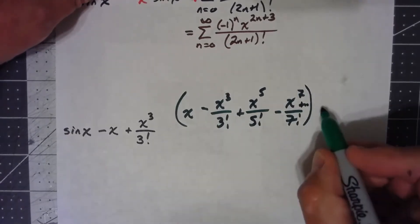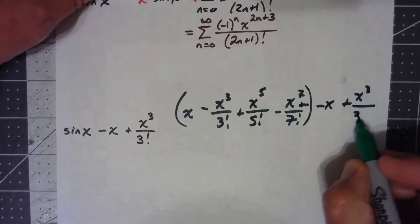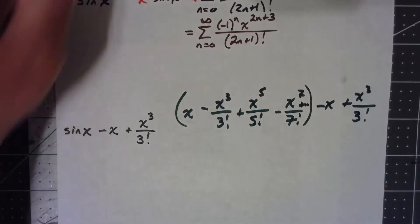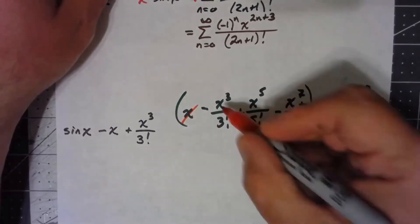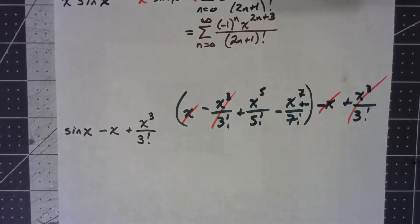But then I've got that, and I'm saying minus x and plus x cubed over 3 factorial. Well, all that's going to do then, just looking at it, the x's will cancel, this will cancel, and I'm just left with everything else past there.